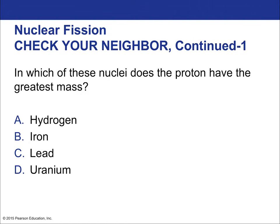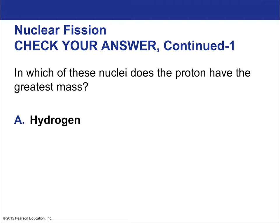In which nucleus does the proton have the greatest mass? This relates to the concept of binding energy. Because of mass-energy equivalence, it's a fuzzy line between mass and energy at the nuclear level. Nucleons don't all have the same mass — a proton will have more or less mass depending on what atom it's in, because the quantum states it exists in inside the nucleus dictate how it behaves in a matter-energy sense. Some elements have more binding energy and others have less.